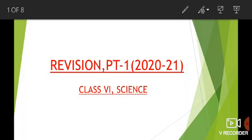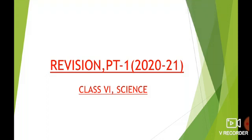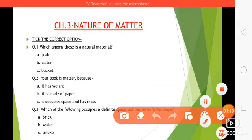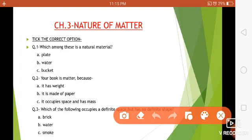Here I have given some questions and three options for each question. You have to choose the correct option and also assess yourself — try to answer the questions first on your own. In this way you can see how much you are getting out of 40 marks. Question number one: which among these is a natural material — plate, water, or bucket?